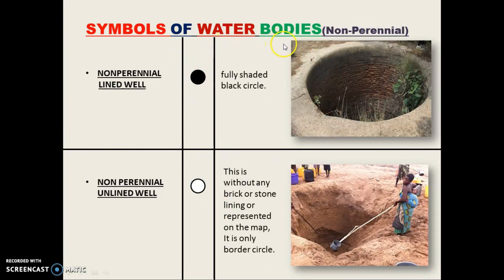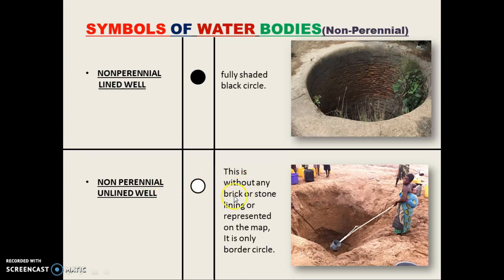For non-perennial water bodies: a non-perennial lined well is shown as a fully shaded black circle, surrounded by cement or bricks. A non-perennial unlined well is shown as only a black border circle, without any brick or stone lining. These are seasonal — they will have water when there is rain, otherwise they remain dry throughout the year.